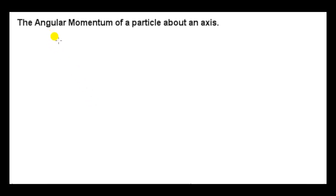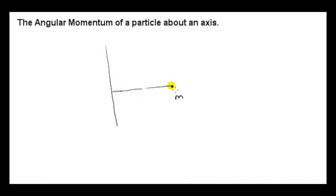Before we discuss the angular momentum of a rigid body about an axis, let's start by considering the angular momentum of a particle about an axis. We will consider the simplest case. Here's our particle, here's our axis. Let's draw in this radial line from the particle perpendicular to the axis. Let's assume that the particle's velocity is in a circle, so that every instant the velocity vector is perpendicular to the position vector.